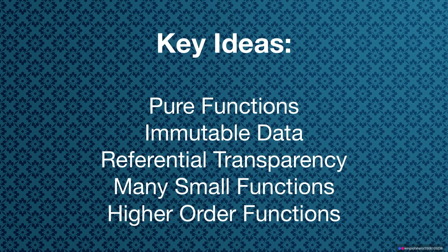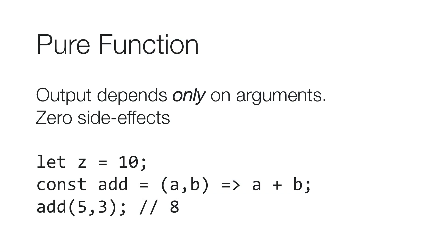If you're going to go down this road, there's a great book called 'Composing Software' by Eric Elliott. It talks about all functional programming and how to use composition to actually create something akin to a class. The key ideas we're going to run through in a functional construct are: pure functions, immutable data, referential transparency, using many small functions, and composing them using higher order functions.